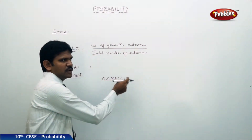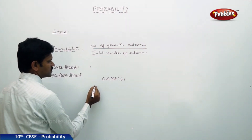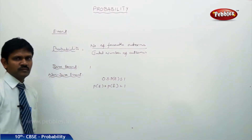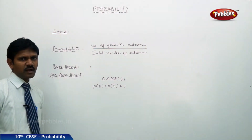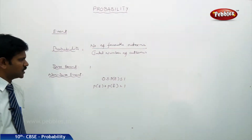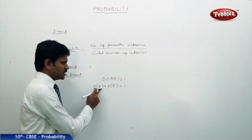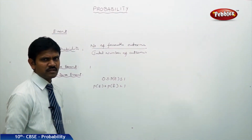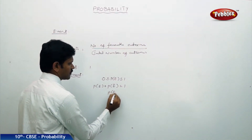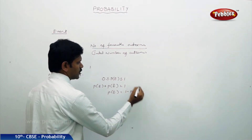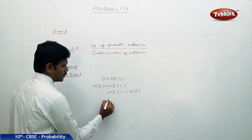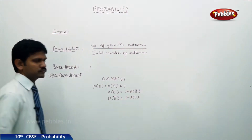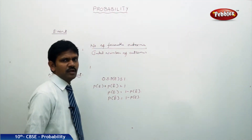The probability of an event lies between 0 and 1. Another important definition: P(E) + P(Ē) = 1. A non-sure event can also be expressed as an impossible event. From this formula we can derive that P(E) = 1 − P(Ē), or equivalently P(Ē) = 1 − P(E).